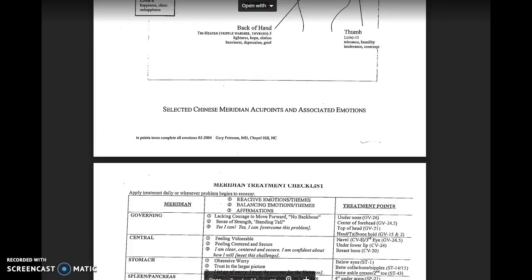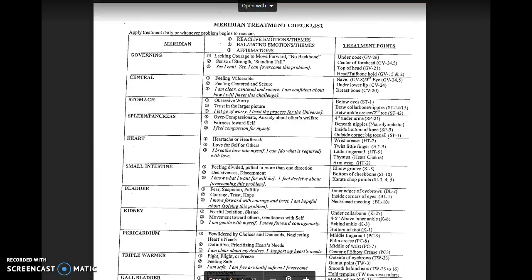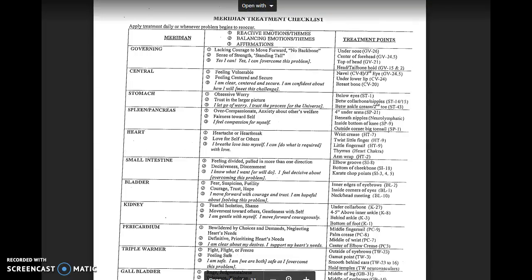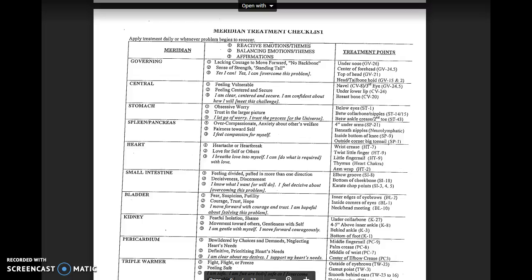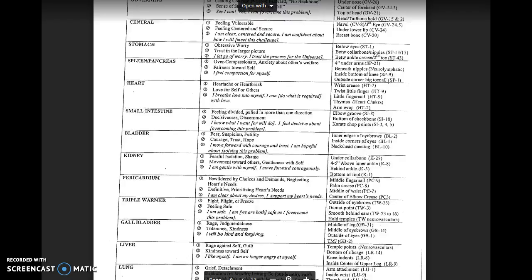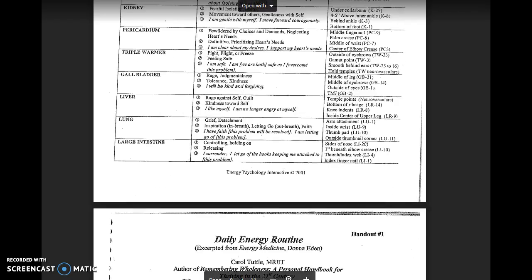That one is from Peterson MD, Chapel Hill, North Carolina. So the Chinese meridian acupoints and the associated emotions, that's a nice chart. Same with this one. Here's a really extensive list on each meridian, the treatment points and all the emotional issues for each one. It's really a good one. I got that from the Energy Psychology Interactive. That's from Donna Eden.